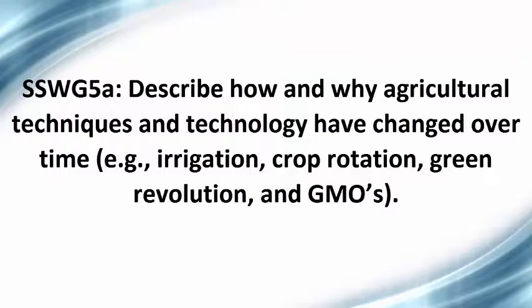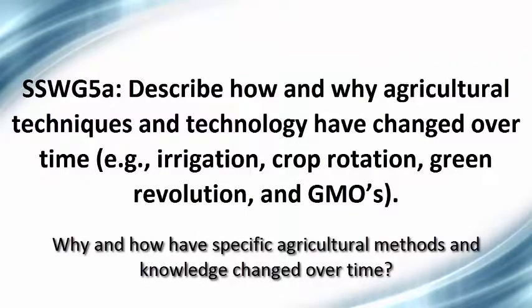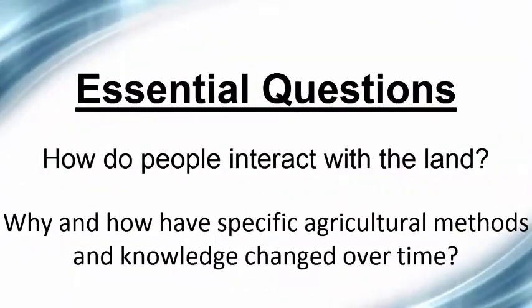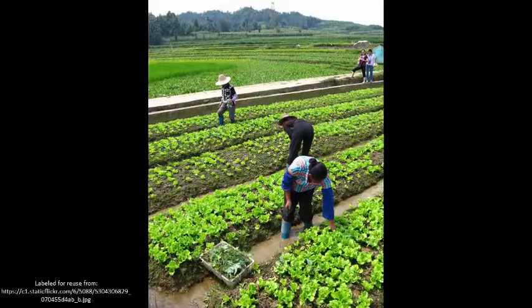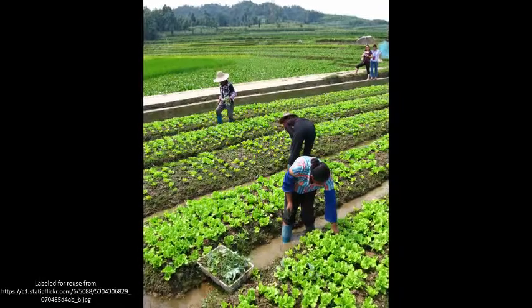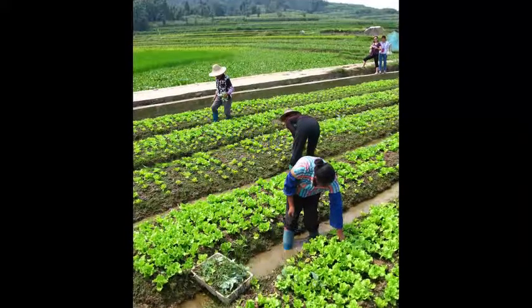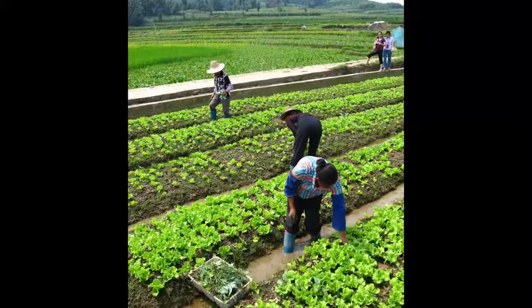Now let's unpack the element. This is essentially asking: why and how have specific agricultural methods and knowledge changed over time? In fact, these questions could be used as essential questions for a unit of instruction on this standard and element. It is important for students to understand that humans interact with the environment every day in many ways, most without even thinking about it.